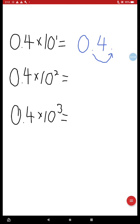Let's go on to 0.4 times 10 to the second. Write out your 0.4. Now shift that decimal place over one, two places to the right. And fill in the empty spot with a 0.